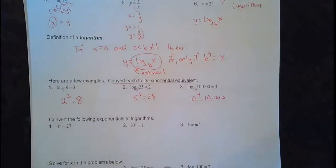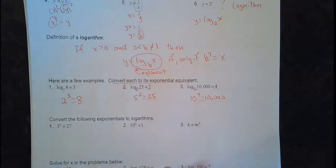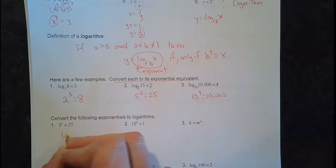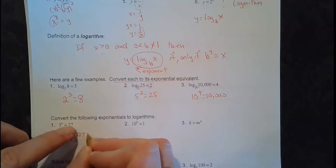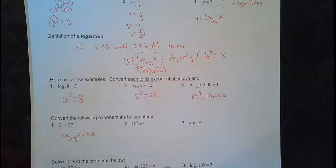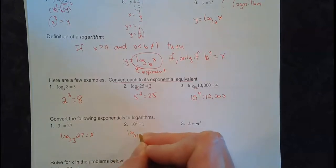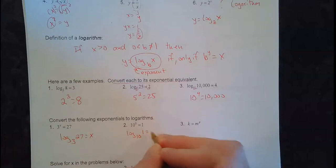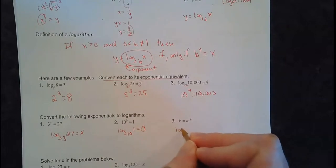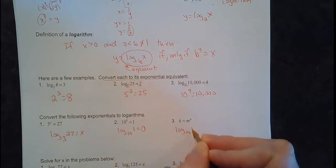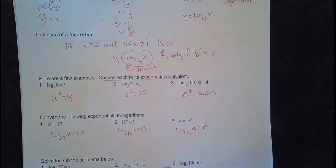Now going back the other way - let's convert the following exponentials to logarithms. We're not solving, just converting back and forth. Log base 3 of 27 equals x - the base is 3, the answer is 27, the exponent is x. Log base 10 of 1 equals 0, because the exponent is always on the other side by itself. Log base m of k equals p. Nothing to solve yet, we're just converting.